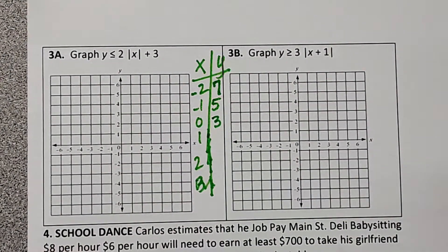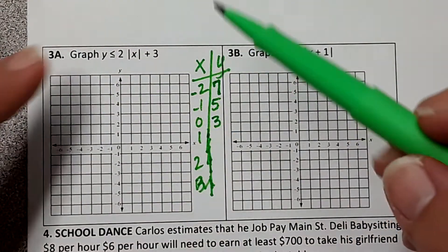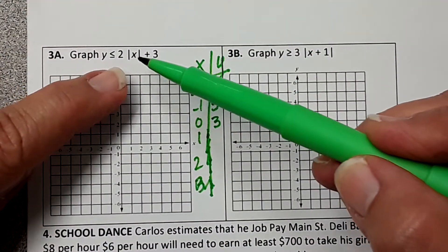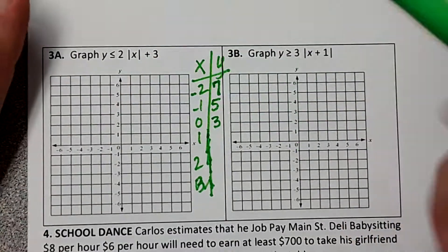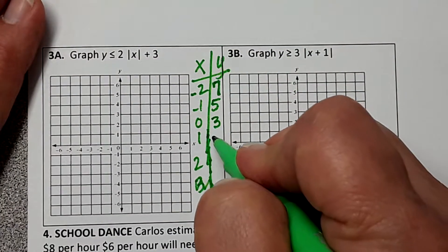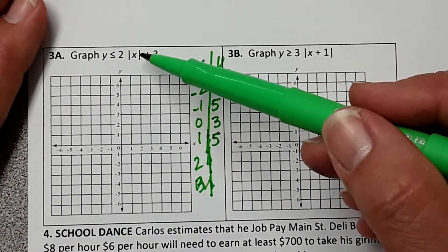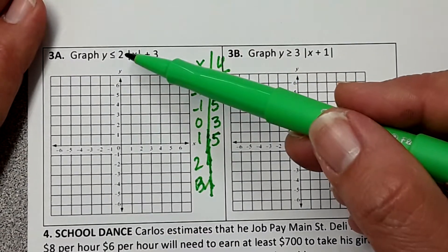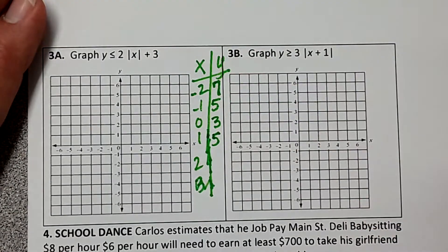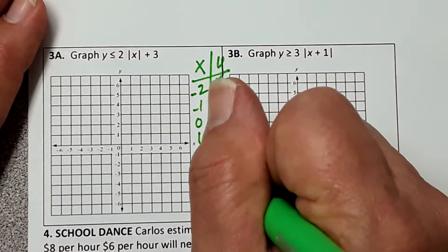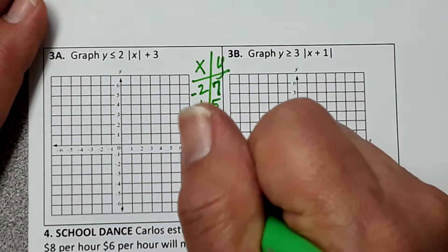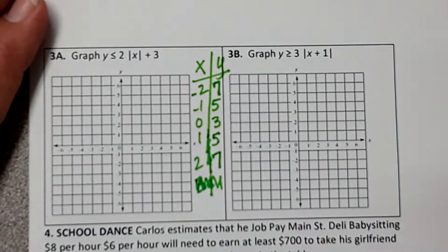The absolute value of 0 is 0 times 2 is 0, 0 plus 3 is 3. And see, that's our vertex. Our vertex went from 0, 0 to 0, 3. And when we graph it, you'll see that. The absolute value of 1 is 1, 1 times 2 is 2, 2 plus 3 is 5. And then 2 times the absolute value of 2 is 2, 2 times 2 is 4, 4 plus 3 is 7. And we didn't need that 3, and let's graph it.